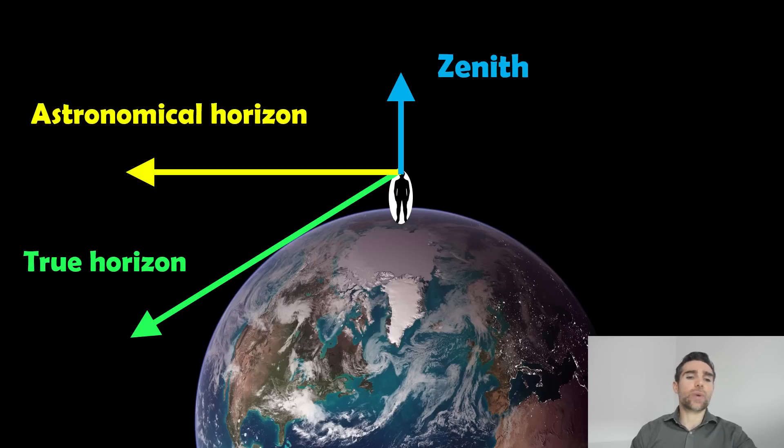And then we also have some horizons as well. We have the astronomical horizon and we have the true horizon. We actually also have the visible horizon as well. I'm going to explain what the differences are between all of those.